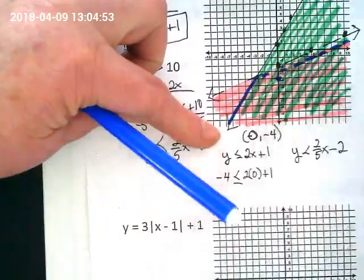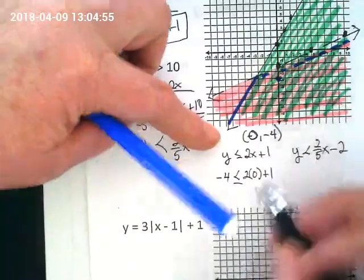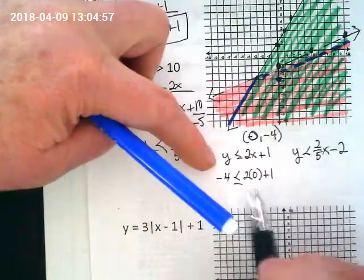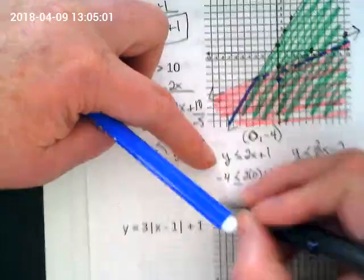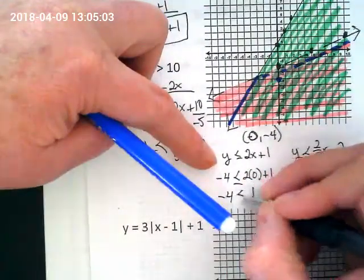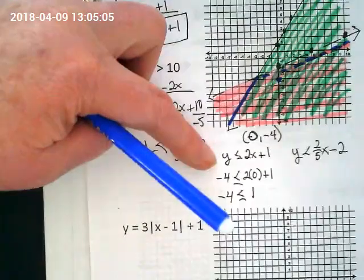So I'm going to put it over where the y was. And I'm going to go ahead and see if this is true. What's 2 times 0 plus 1? 1. Is negative 4 less than or equal to 1? Yes.